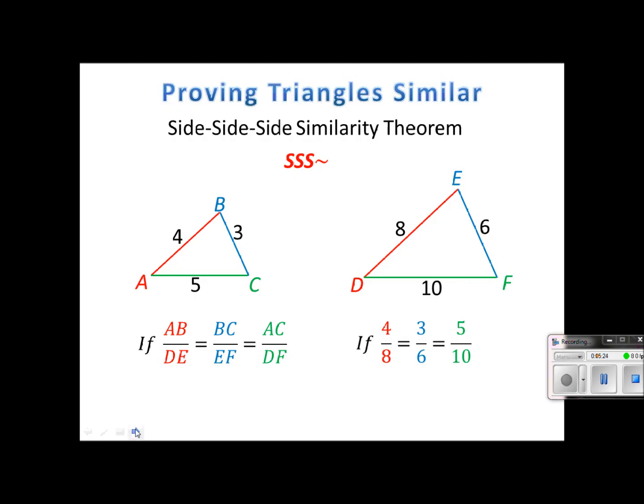Well if we reduce those, they would all simplify to 1 half. 4 over 8 is 1 half. 3 over 6 is 1 half. 5 over 10 is 1 half. They all have the same scale factor and we can also call it the same ratio. Well that's enough to prove that triangle ABC is similar to triangle DEF.